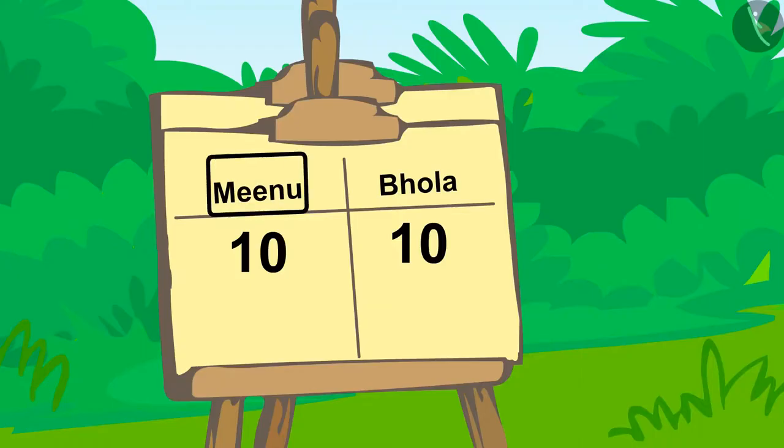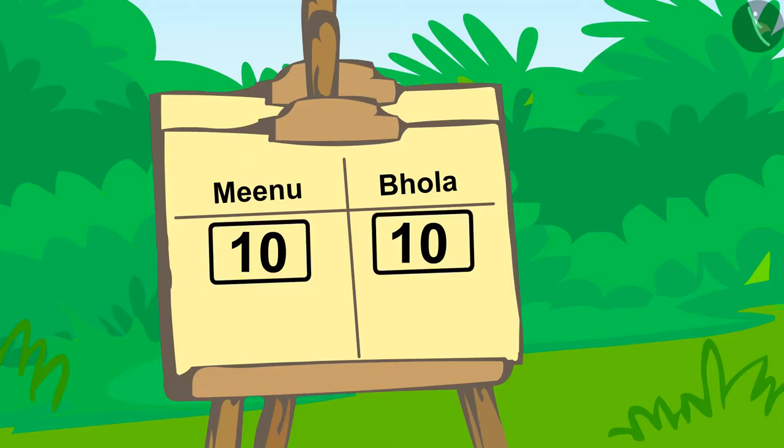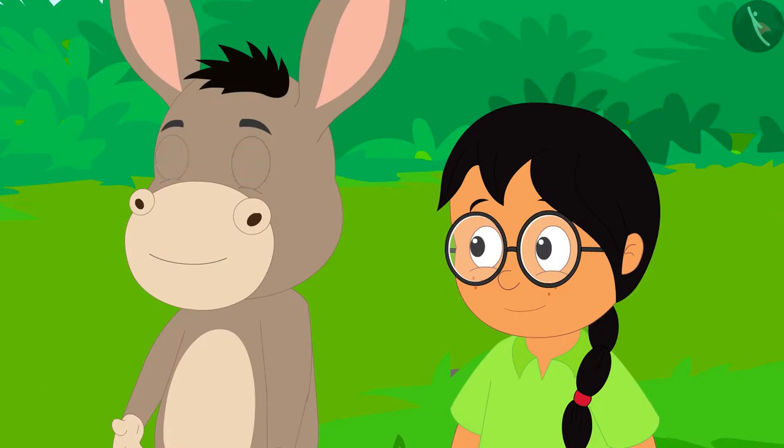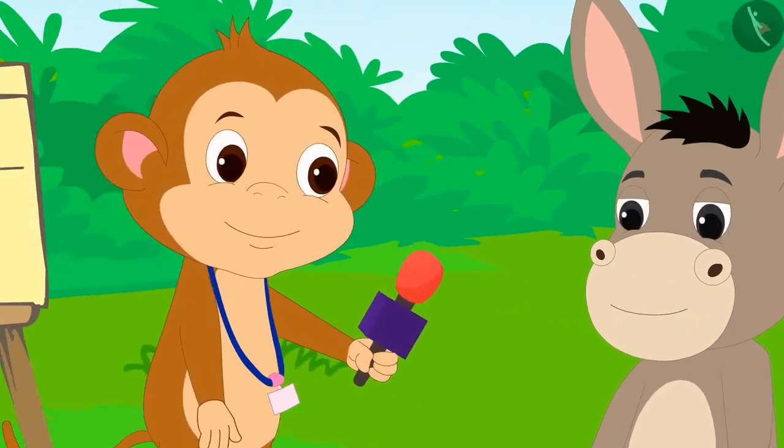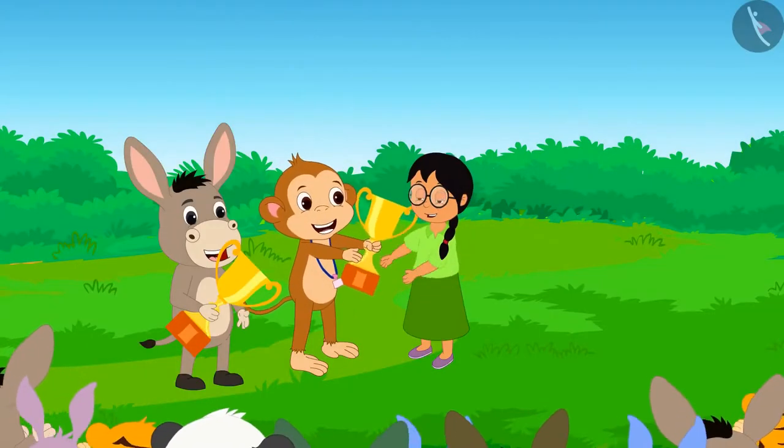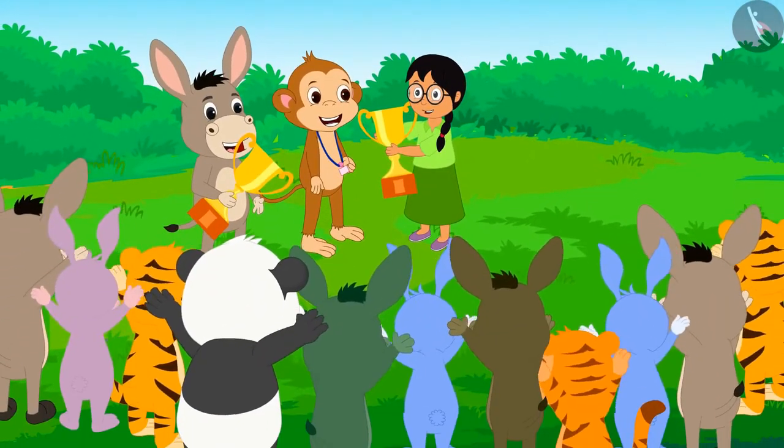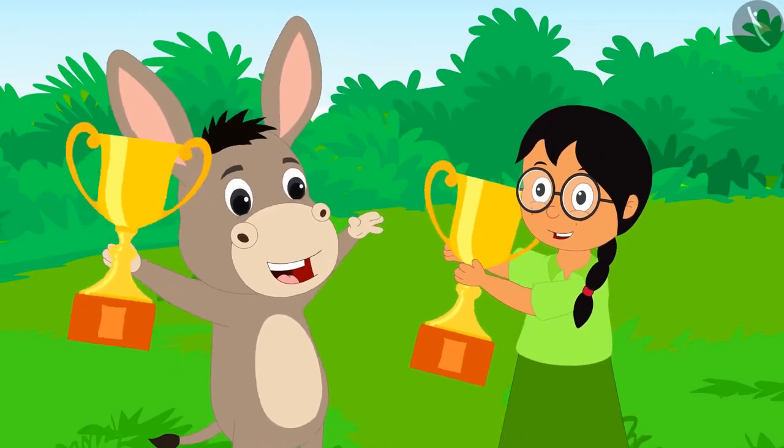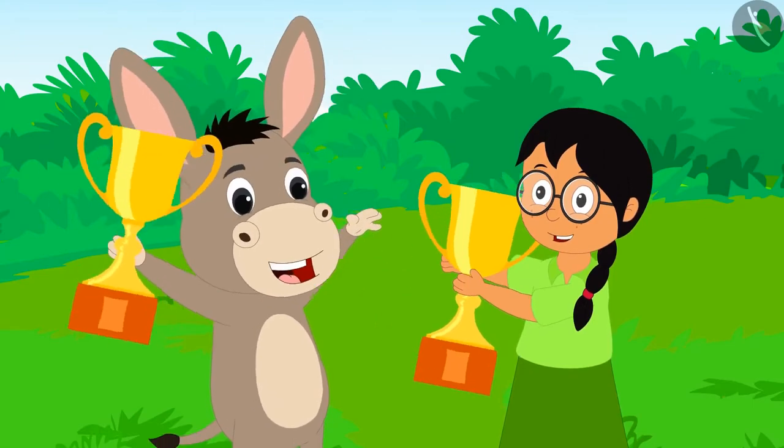Meenu and Bhoala have scored equal points. Babban declared both Bhoala and Meenu the winner of the competition and gave them the winning trophy. Everyone in the audience is clapping. Bhoala and Meenu are happily dancing.